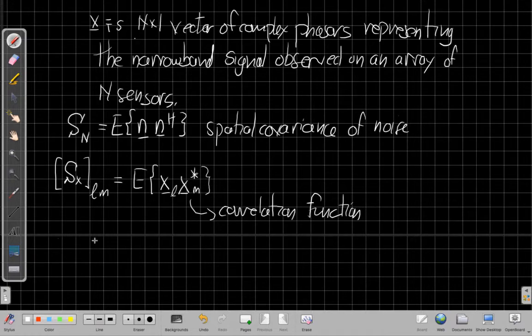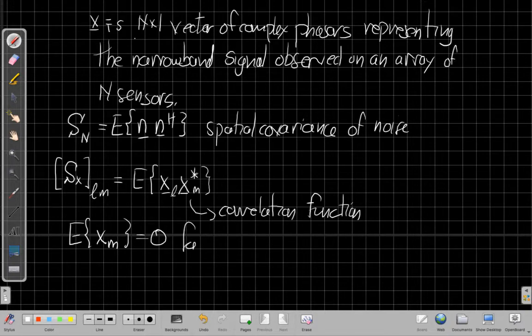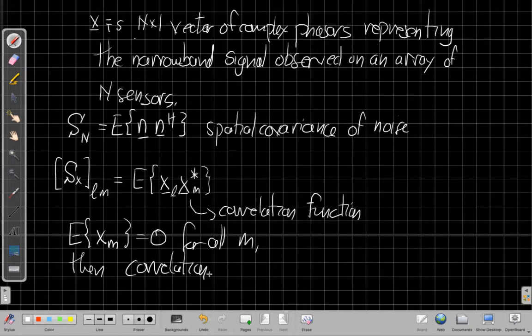Okay, if you're back, the two are equal if the expected value of a random variable, X_M, is equal to zero for all M, then the correlation matrix and covariance matrices are equal.